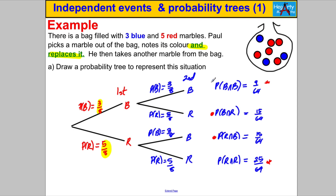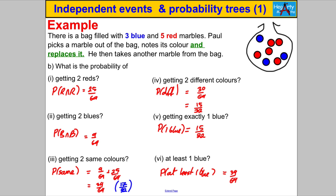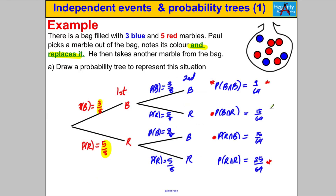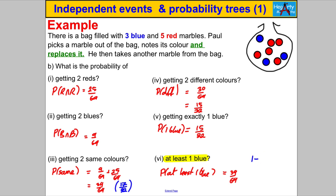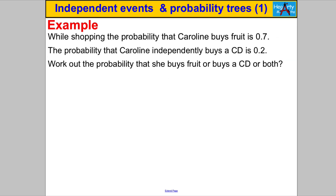What's the probability of at least one blue? That includes getting two blues, one blue then red, and red then blue — so it's 9 out of 64 plus 15 out of 64 plus 15 out of 64, which is 39 out of 64. One thing to point out: for 'at least one' questions, an easier method is to do one minus the case where there is no blue. One minus 25 out of 64 also gives you 39 out of 64.